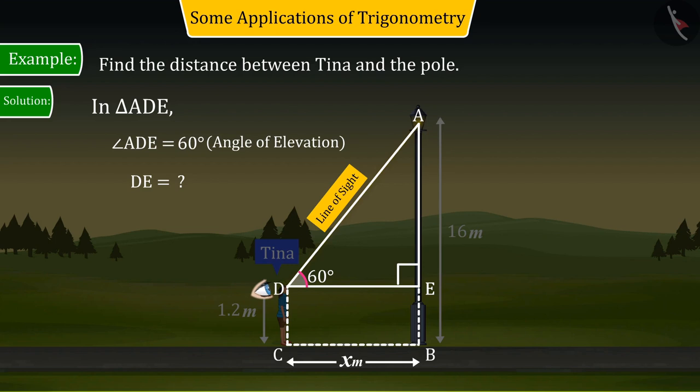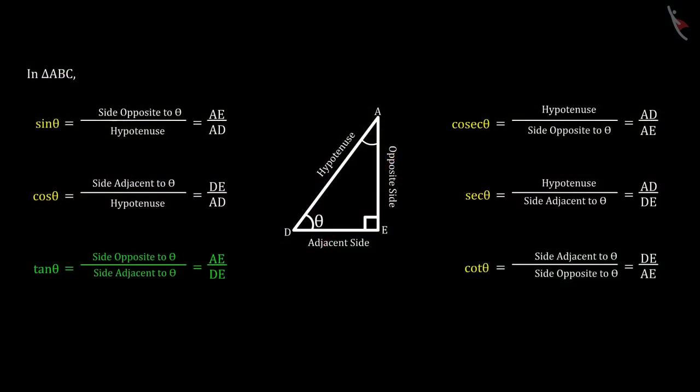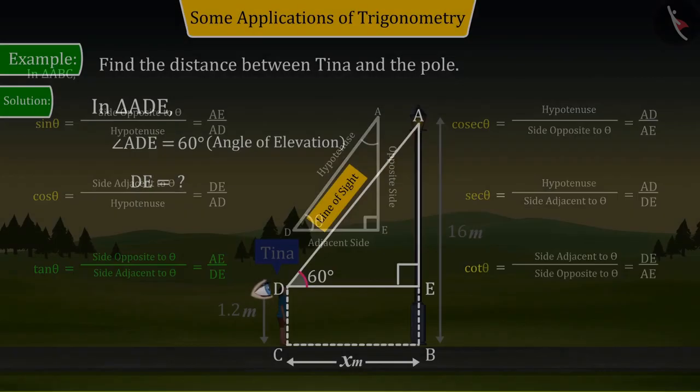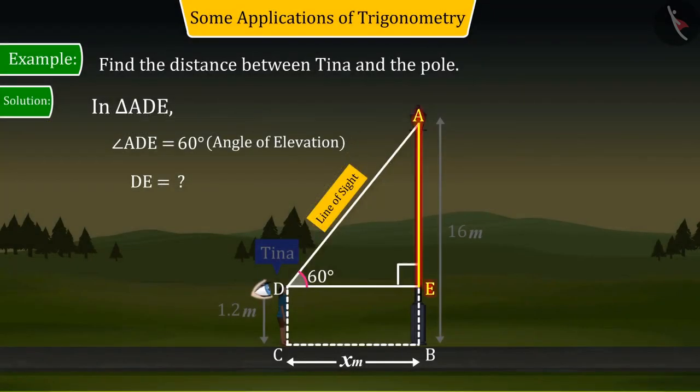With the help of the information obtained using the trigonometric ratio in triangle ADE, you can tell that the trigonometric ratio made from the side opposite to and adjacent to angle D will be tan, because here side AE is known.